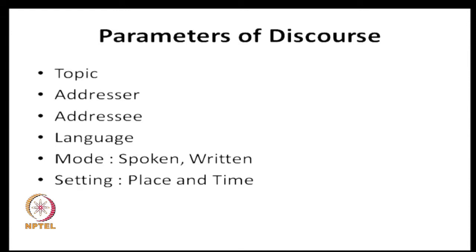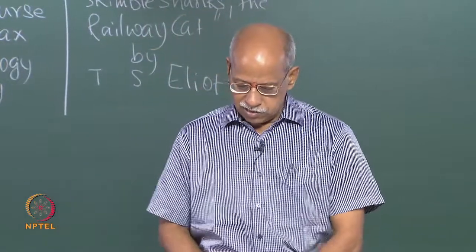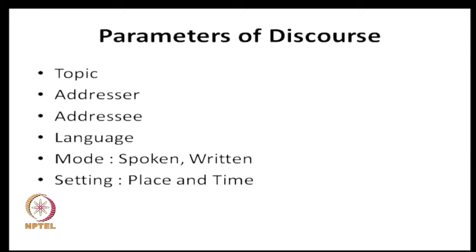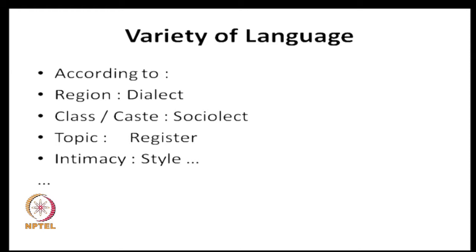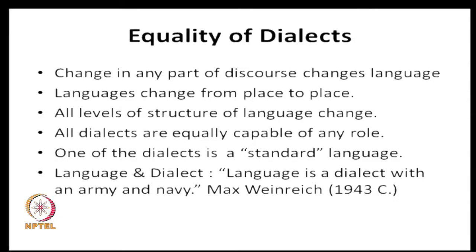These are the parameters of discourse: topic, addresser, addressee, language, mode — it can be spoken or written — setting, place, time, etcetera. That also means that language changes. There is variety. Any change in any part of discourse can change language. Language can change from place to place, and it changes not only in pronunciation — it changes in words, sentences, structure.